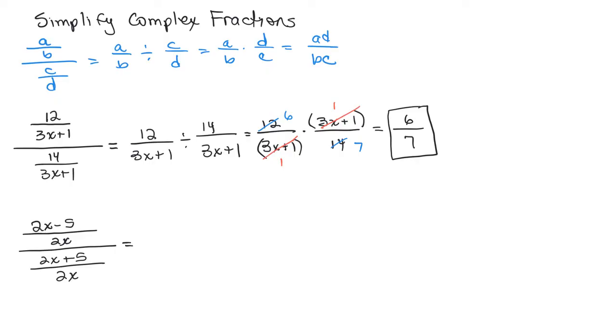So again, since I have just a single fraction in the numerator and a single fraction in the denominator, I'm going to write that as 2X minus 5 over 2X divided by 2X plus 5 over 2X. And then since it's dividing, I could multiply by the reciprocal. So 2X minus 5 over 2X times 2X over 2X plus 5.